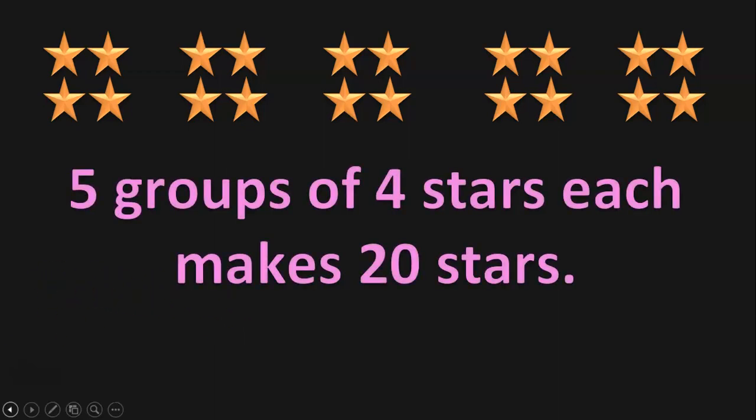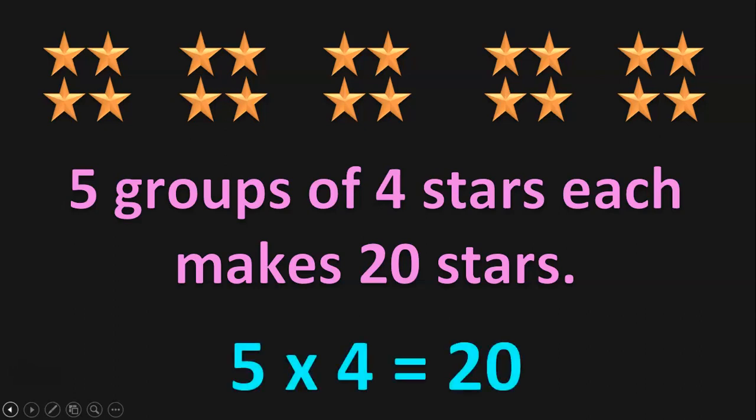And what is the total number of stars now? 4 plus 4 is 8, 8 plus 4 is 12, 12 plus 4 is 16, 16 plus 4 is 20. So we say there are five groups of four stars each, which makes 20 stars. In multiplication statement, how do you write this? 5 into 4 is equal to 20, where 5 means the number of groups and 4 means the number of stars in each group.